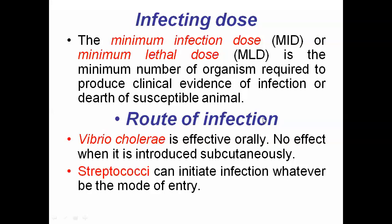Another important factor in virulence is the route of infection. A particular microorganism causes disease only when it enters through a specific route. For example, Vibrio cholerae can cause cholera only when it enters through the mouth orally — there is no effect when introduced subcutaneously by injection. In contrast, Streptococcus can initiate infection regardless of the mode of entry — whether through a skin injury, through the mouth, or any other route.